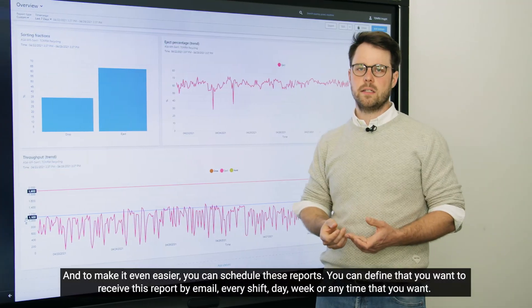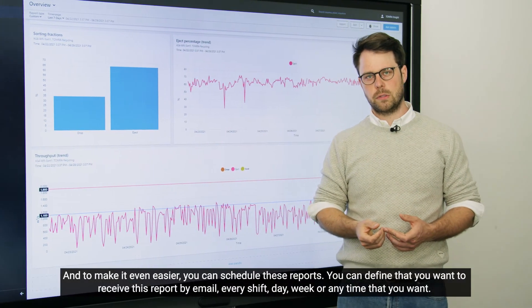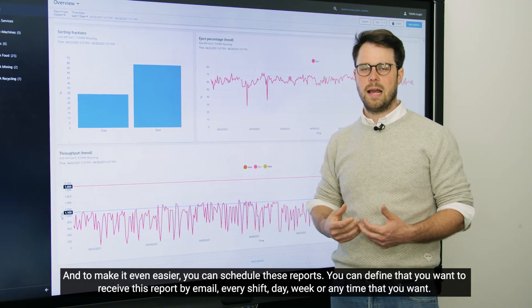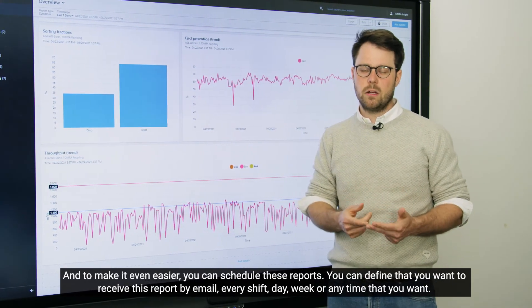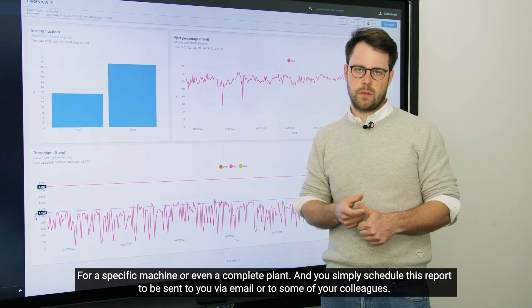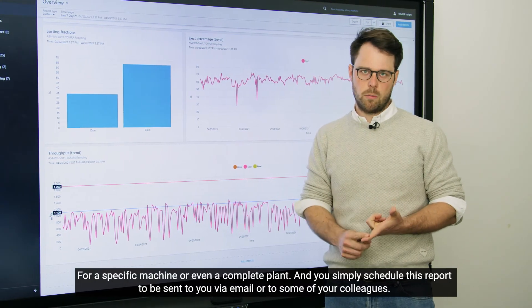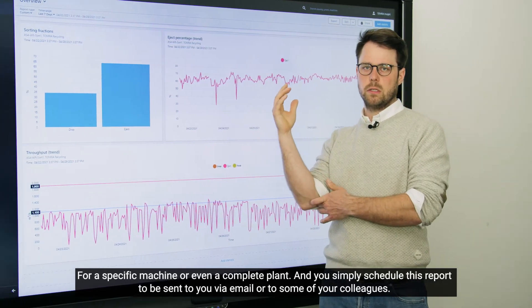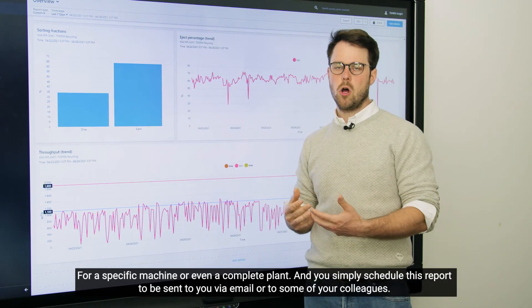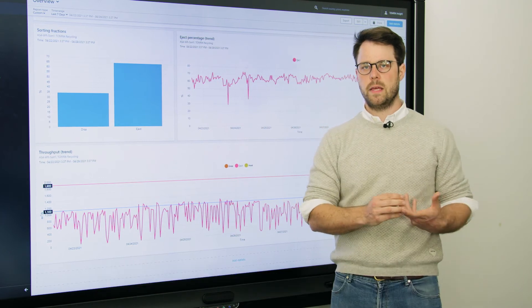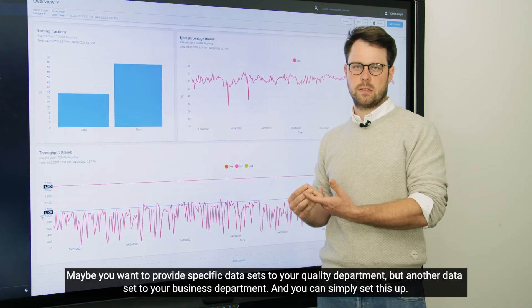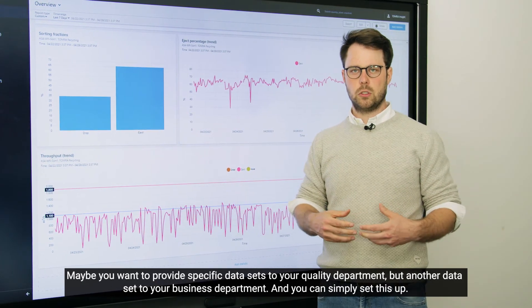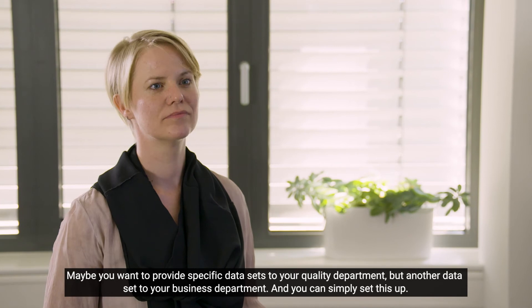And to make it easier, you can schedule these reports. You can define that you want to receive this report by email every shift, day, week, or any time that you want for a specific machine or even a complete plant. And you simply schedule this report to send it to you via email or to possibly some of your colleagues. You want to provide specific data sets to your quality department, but other data sets to your business department. And you can simply set this up.